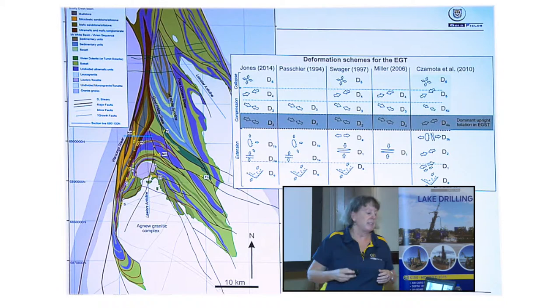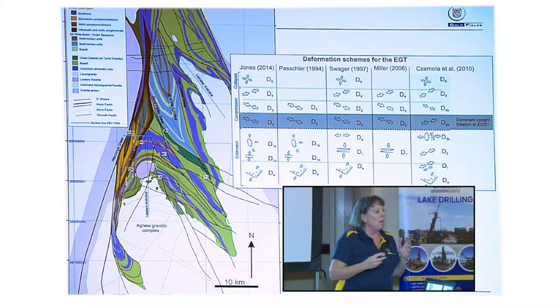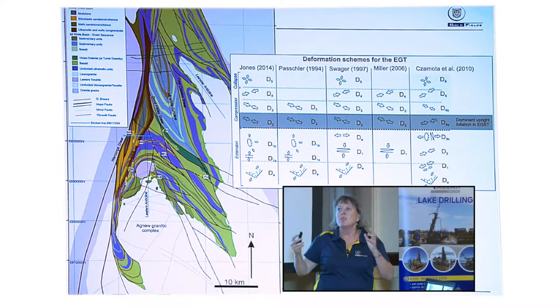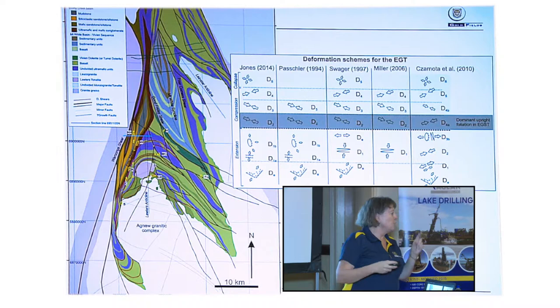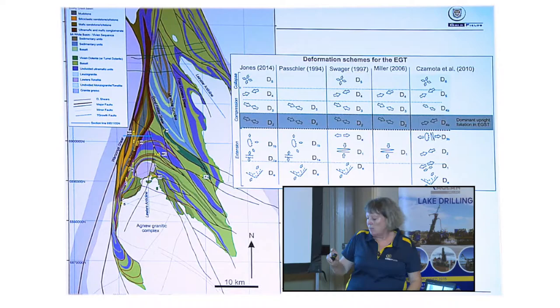I'll take you through some field examples of each event. The first event, DE, is basically the initial extension where you're opening your basins and depositing your mafic and ultramafic sequences and clastic sequences, but with no fabric forming. I like the deformation scheme that Swagger uses because his D1 to D4 are actually based on structures that you can measure in the field. So I leave all early extension to DE, and then I start with my D1 fabric.